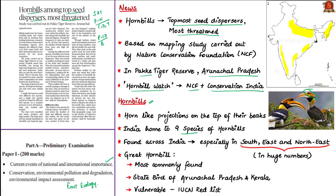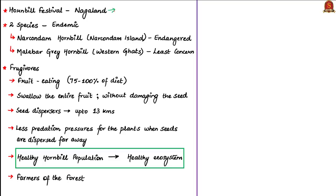The Great Hornbill is the most commonly found hornbill species in India and is the state bird of two states: Arunachal Pradesh and Kerala. They are declared as vulnerable under the IUCN Red List. The Hornbill Festival is celebrated in the state of Nagaland in the month of December every year, and it is called the Festival of Festivals in Nagaland.